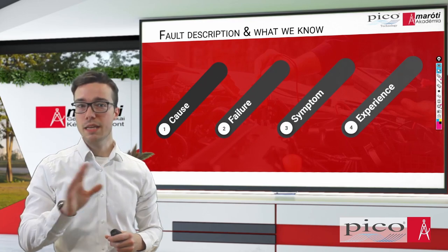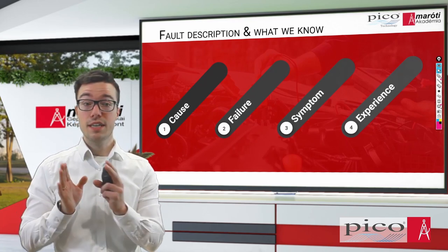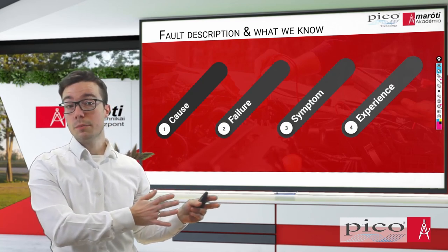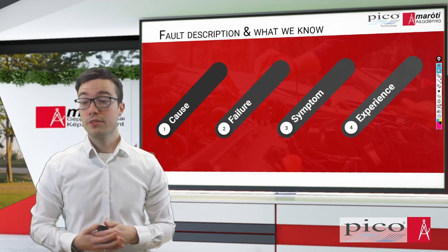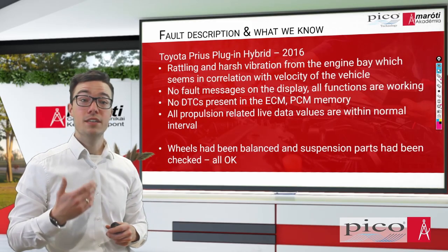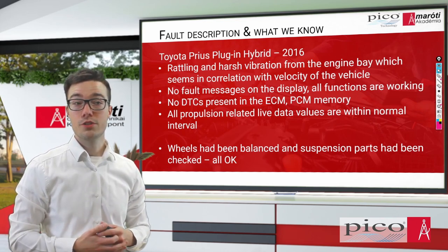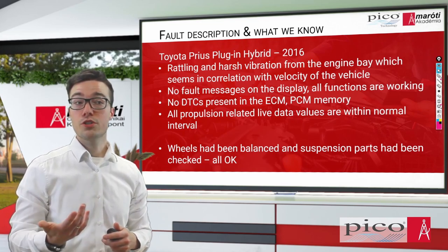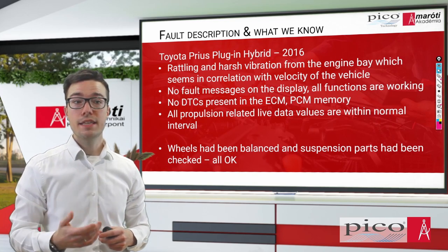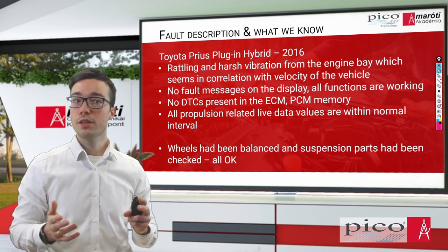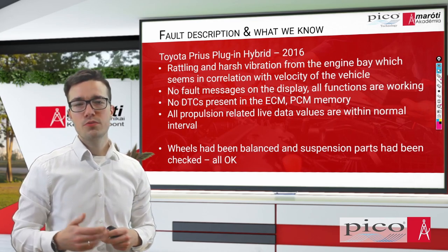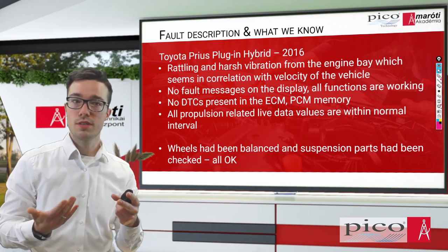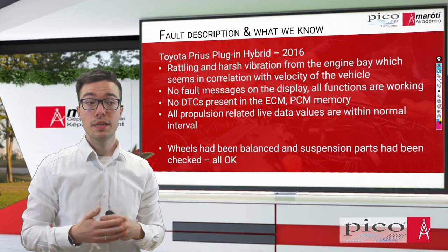All problems start with the same manner. So there is a cause which leads to a failure, which has a symptom and then at the end, the customer has an experience about that failure. In this case, it was a Toyota Prius, the plug-in hybrid version of it, from 2016. It had a lot of vibration which was coming from the engine bay, and it seemed like it had some sort of correlation between velocity of the vehicle.